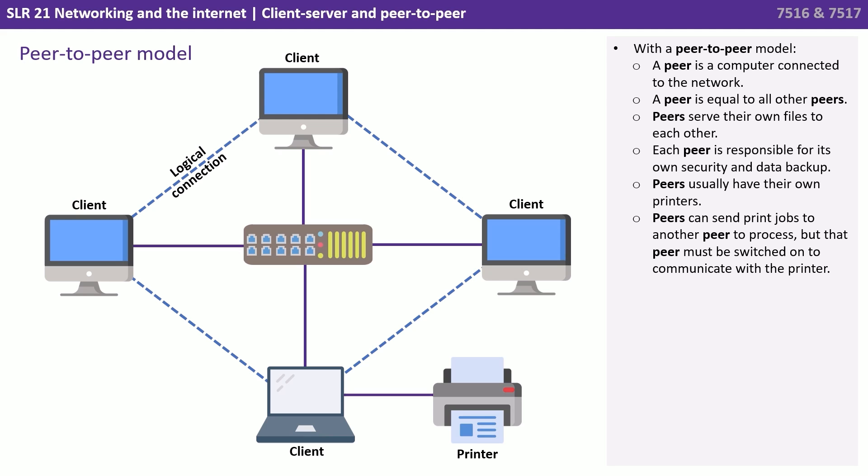Peers usually have their own printers, and they can send print jobs to another peer to process, but that peer must be switched on to communicate with its connected printer.